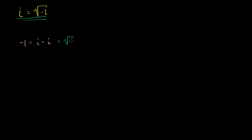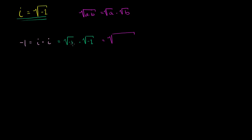So then this would be the same thing as the square root of negative 1 times the square root of negative 1. And then they would tell you that, just from straight up properties of the principal square root function, the square root of a times b is the same thing as the principal square root of a times the principal square root of b. And if you have the principal square root of a times the principal square root of b, that's the same thing as the square root of a times b. So based on this property of the principal root, they'll say that this is the same thing as the square root of negative 1 times negative 1.